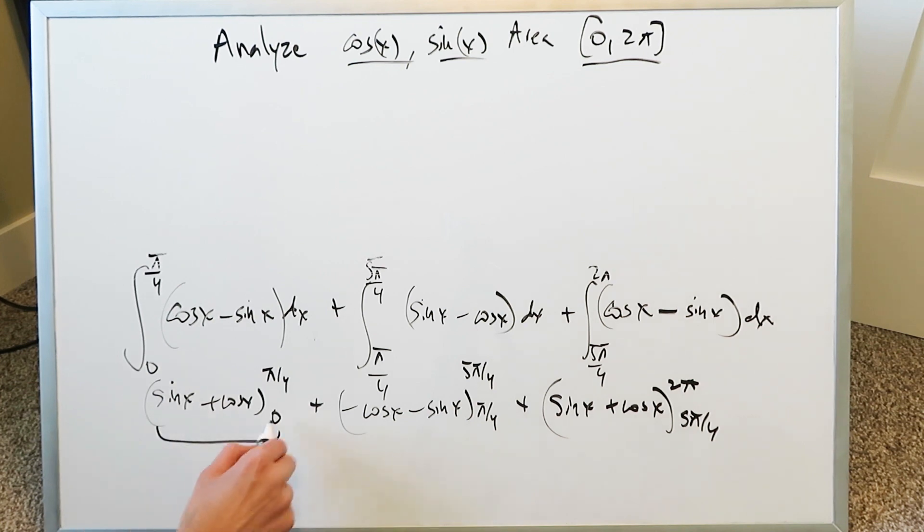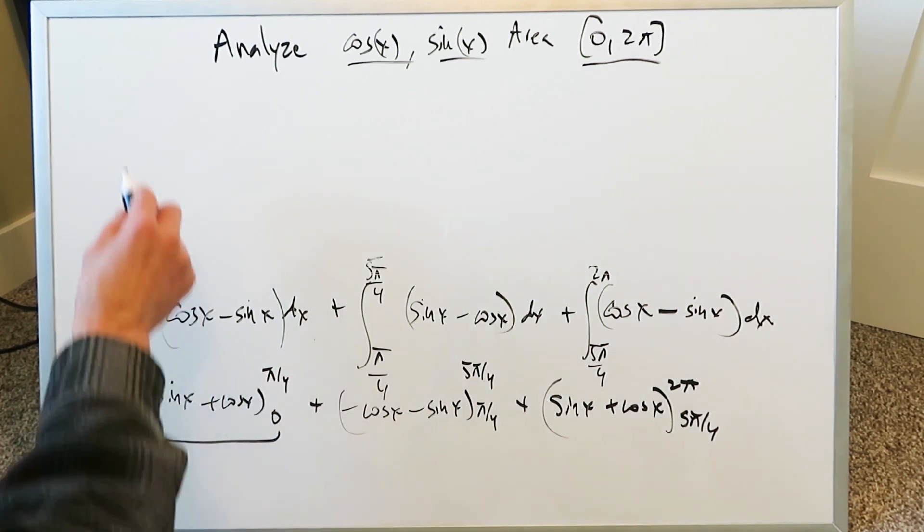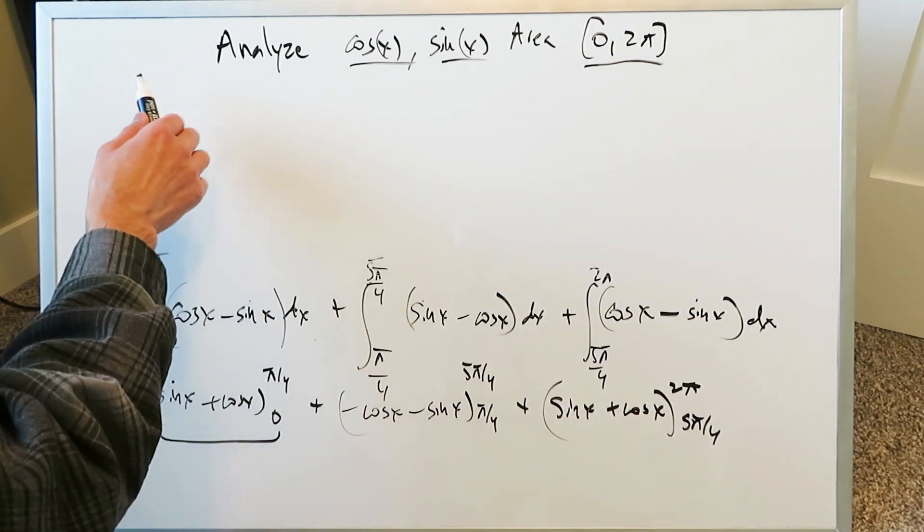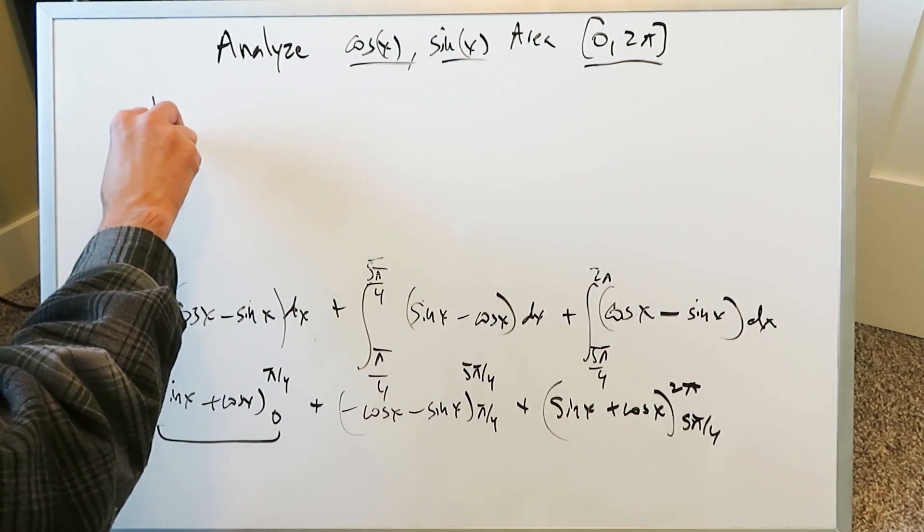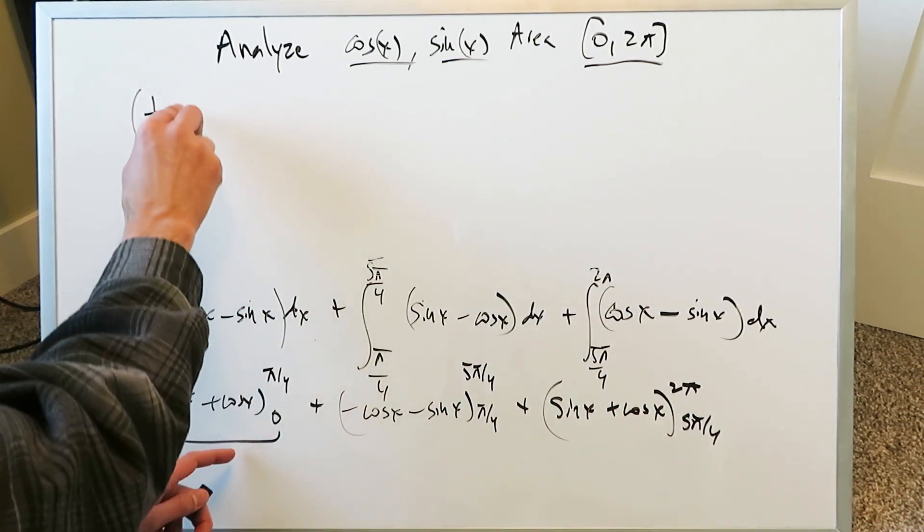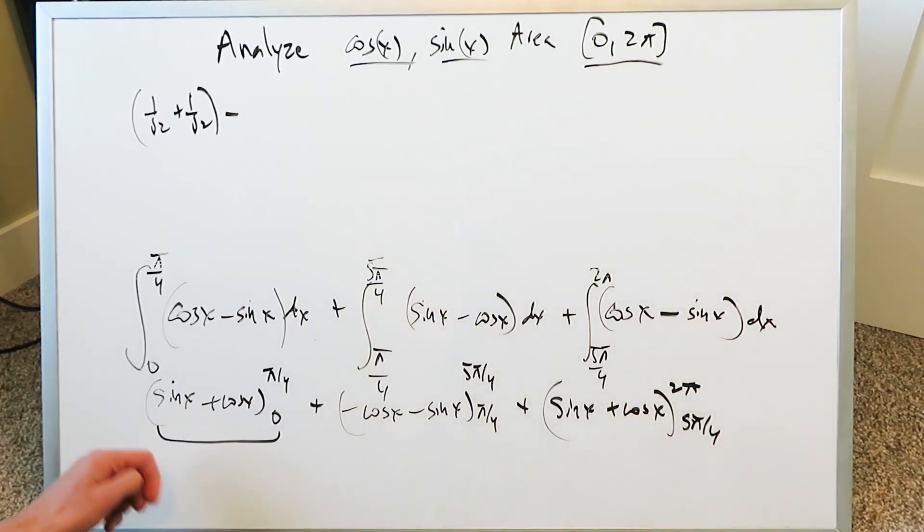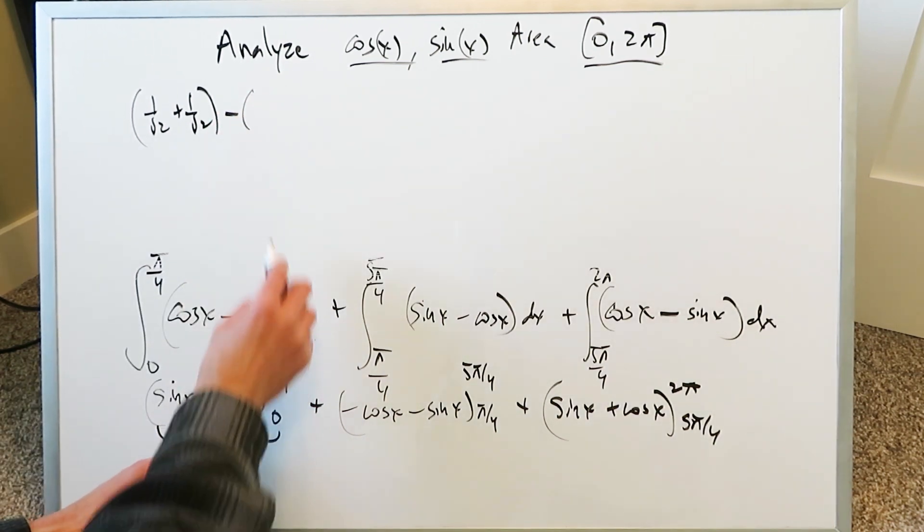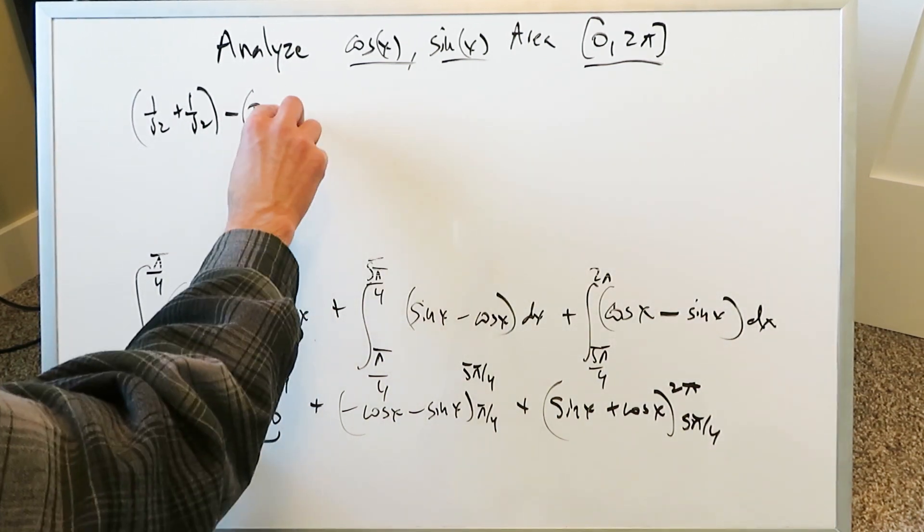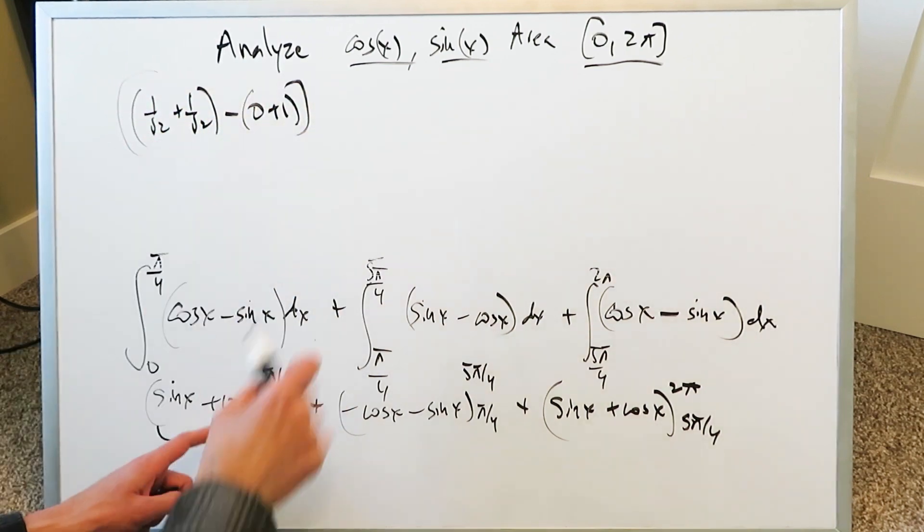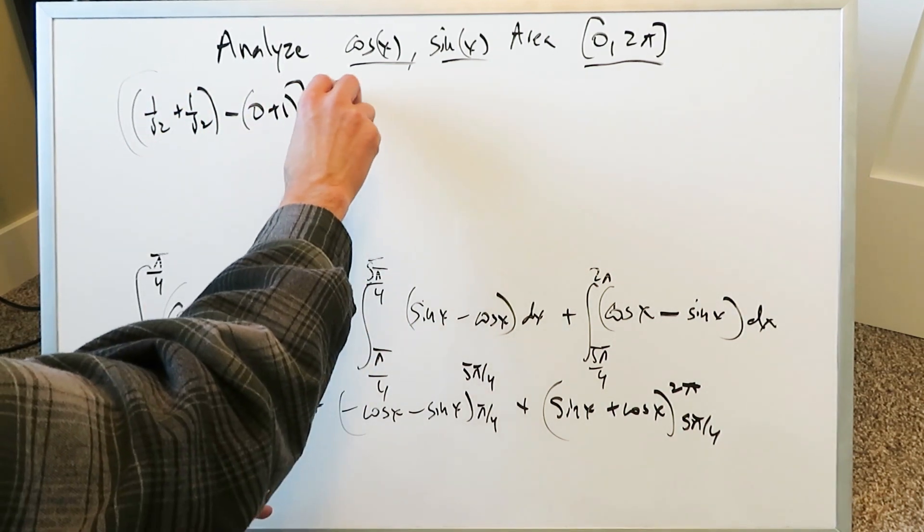Let's focus on the first part: -sin(x) + cos(x) from π/4 to 0. Sin(π/4) is 1/√2, cos(π/4) is 1/√2. Upper limit minus lower limit: sin(0) is 0, but cos(0) is 1. This comes from your first part.